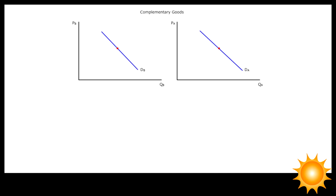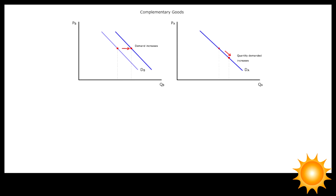Suppose the price of good A goes down on the right panel. The law of demand tells us that more of good A will be purchased by moving down the demand curve. In other words, the quantity demanded for good A will increase.